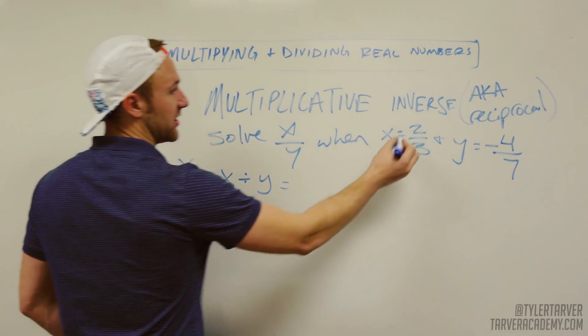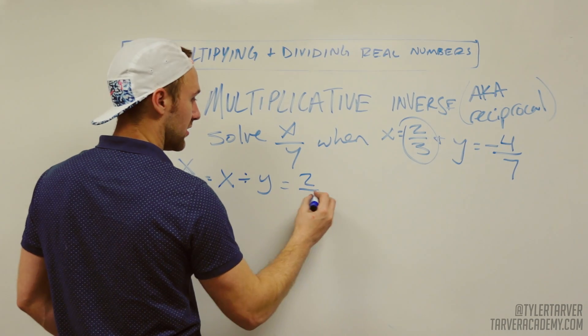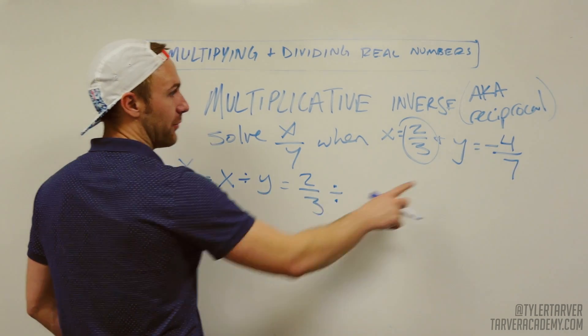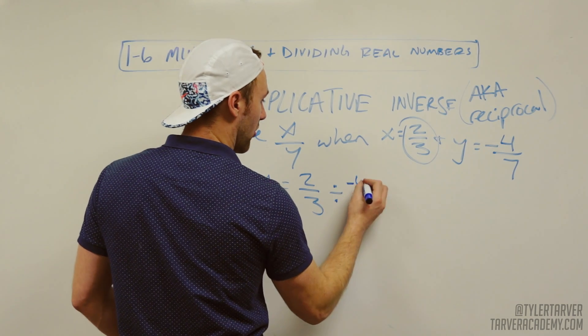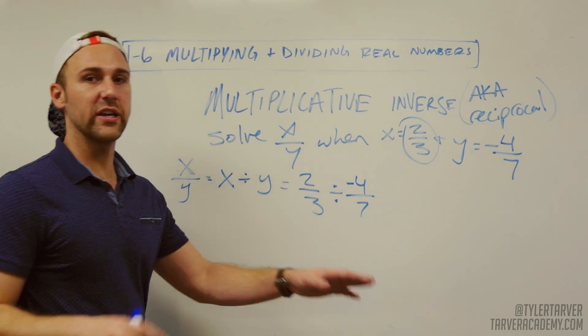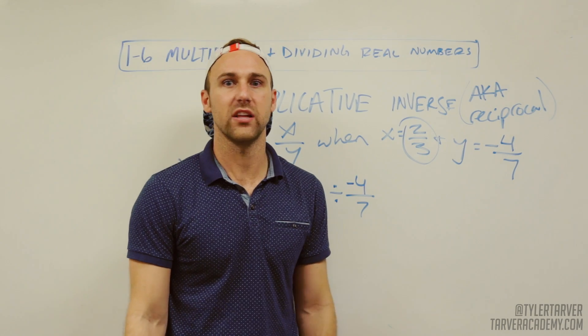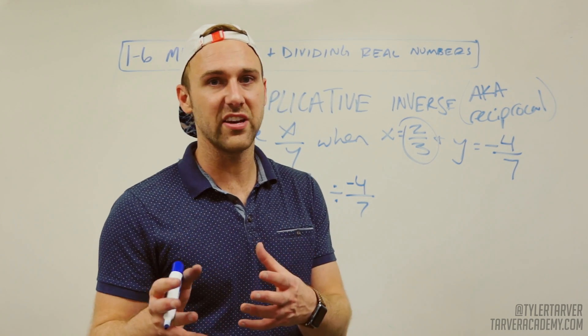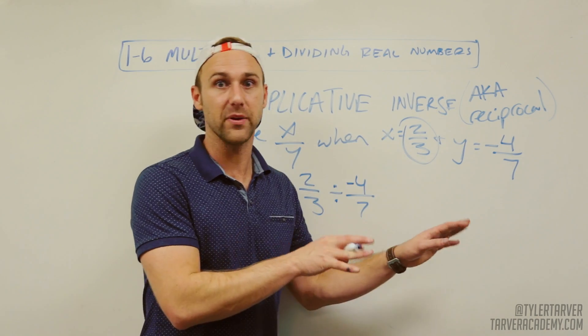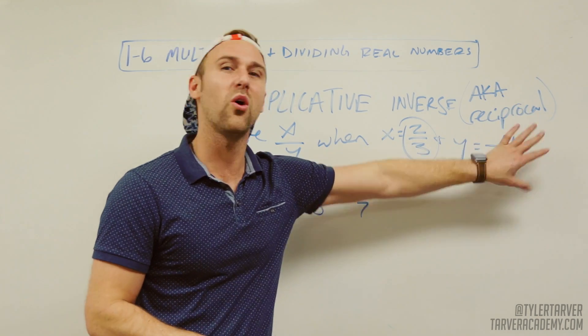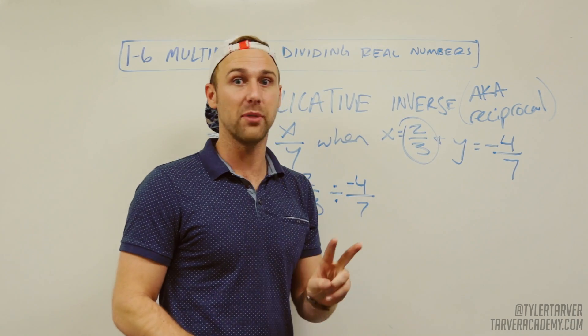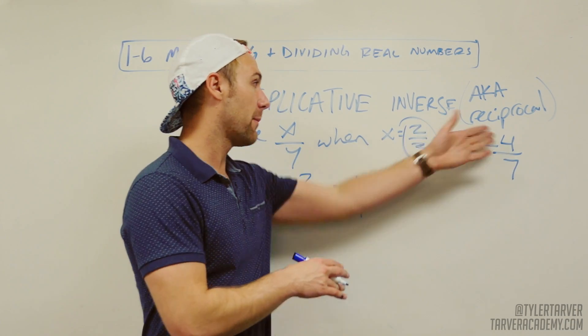Now I'm just going to plug in my x, which is 2 thirds, divided by y, which is negative 4 over 7. When you're doing this, you're like 'oh the negative's there, I'm gonna subtract them.' No. If that negative's there, don't just start subtracting. Just give the negative to one of the numbers and let them keep it. I'm gonna give it to the 4 - he's gonna hang out with the negative.